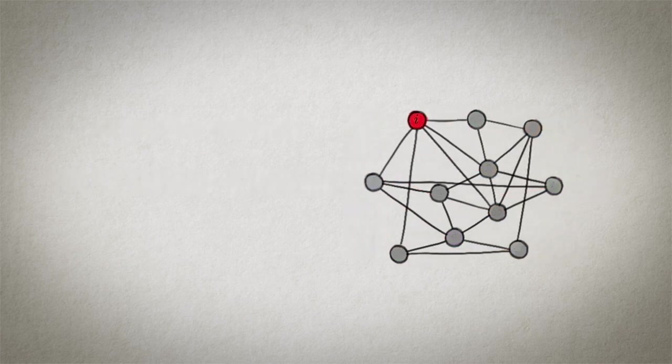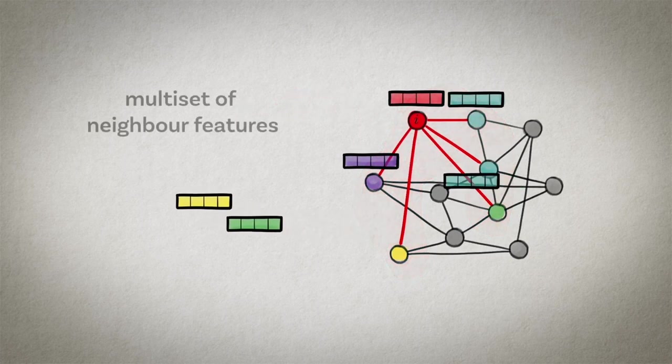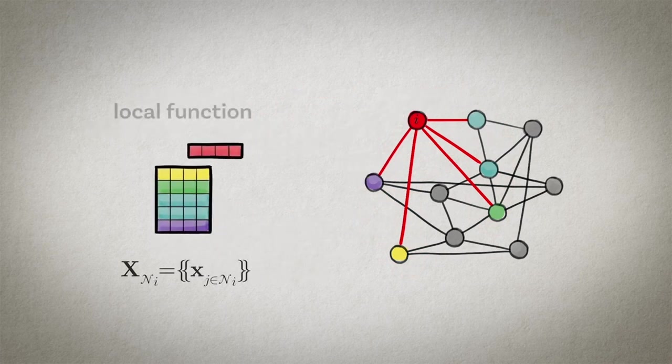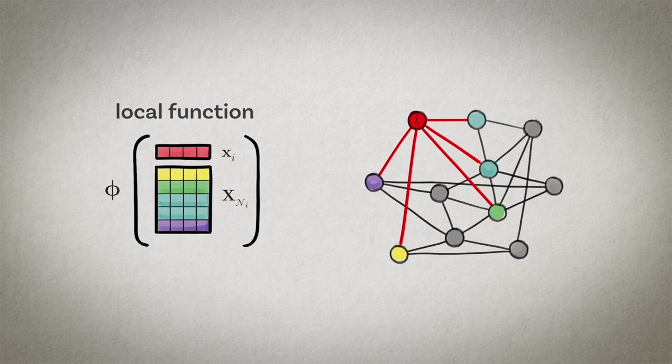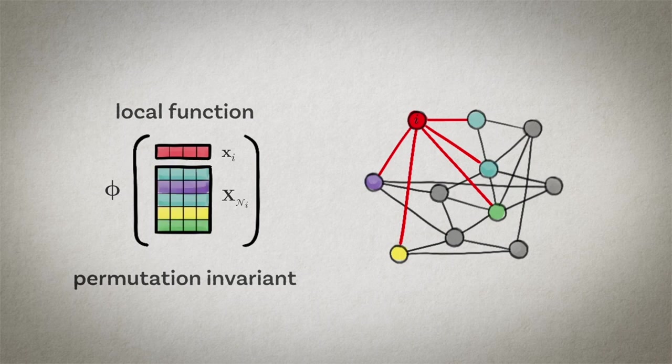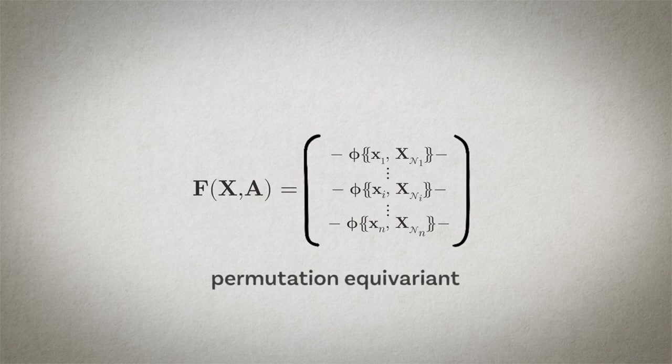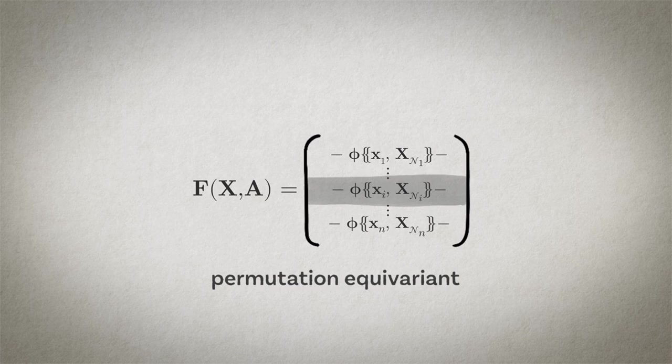A way of constructing a pretty broad class of tractable functions on graphs is using the local neighborhood of a node. We look at the nodes that are connected by an edge to a node i and aggregate their feature vectors together with the feature vector of the node i itself. Because we don't have a canonical ordering of the neighbors, this must be done in a permutation invariant way. So this local aggregation function that I denote by phi must be permutation invariant. When we apply this phi at every node of the graph and stack the results into a feature matrix, we get a permutation equivariant function f. The way how the local function phi is constructed is crucial and its choice determines the expressive power of the resulting architecture.